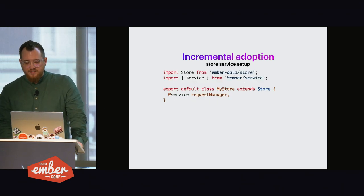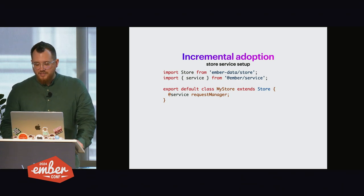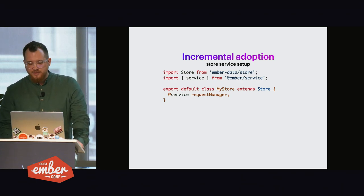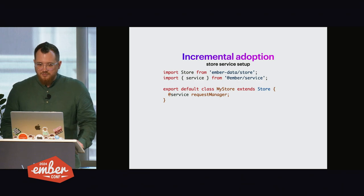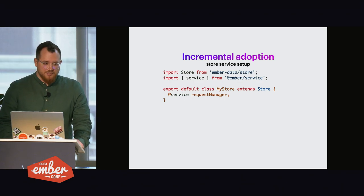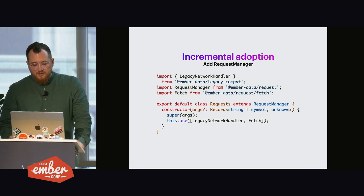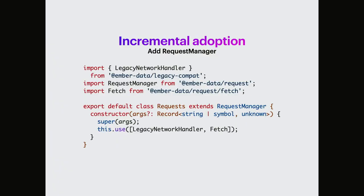We would need to have the store service in the application. We previously never declared it, but we need to declare the store service now. It will inject the request manager and this will allow us to configure the request manager later. The main thing of request manager configuration for the current state of the application is to use the legacy network handler. It will make sure old requests work without any difference in the application code, but at the same time you can start using new APIs. That's actually all you need to do to make everything work as it used to, and now let's see how you adopt the new APIs.